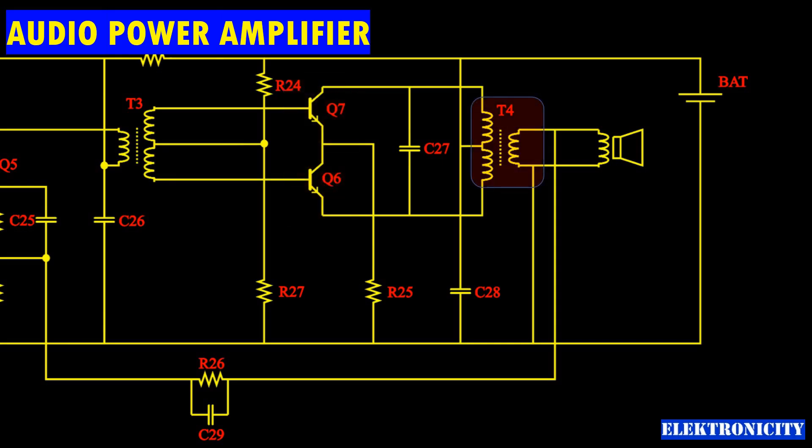T4 converts the half wave currents of each transistor back into a complete waveform and matches the high impedance of the transistor amplifier to the low impedance of the speaker.